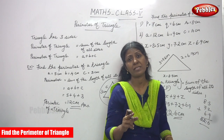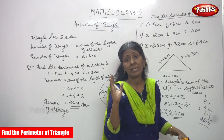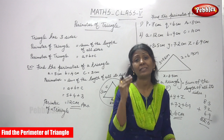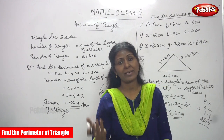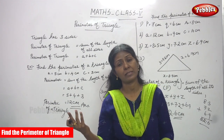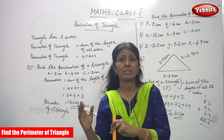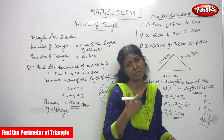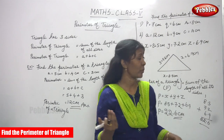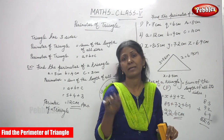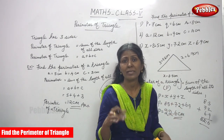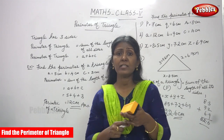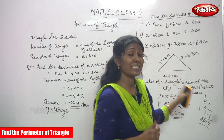For the perimeter of the triangle, we write the unit as centimeters — there is no need to write centimeter square or meter square. Centimeter square and meter square are only used for area — area of a triangle, square, or rectangle. But for the perimeter of a square, rectangle, or triangle, we use only centimeter or meter.